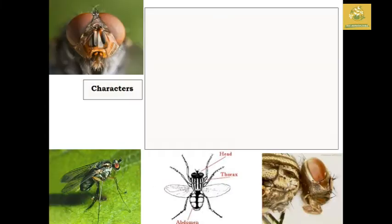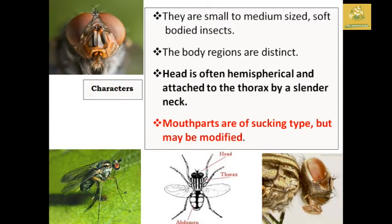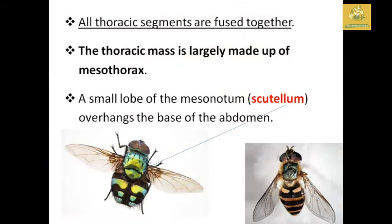Seeing the characteristics, Diptera insects are said to be small to medium sized and soft-bodied. The body regions are distinct — you can classify the thoracic region, abdomen, and head separately. The head is said to be half-encircled and attached to the thorax by a slender neck. The mouthpart is said to be sucking type, but may be modified in some groups.